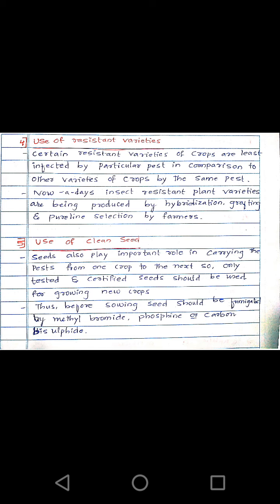The fifth method is the use of clean seed. Seeds also play an important role in carrying pests from one crop to the next, so only tested and certified seeds should be used for growing new crops. Before sowing, seeds should be fumigated with methyl bromide, phosphine, or carbon bisulfide to reduce insect pest growth.